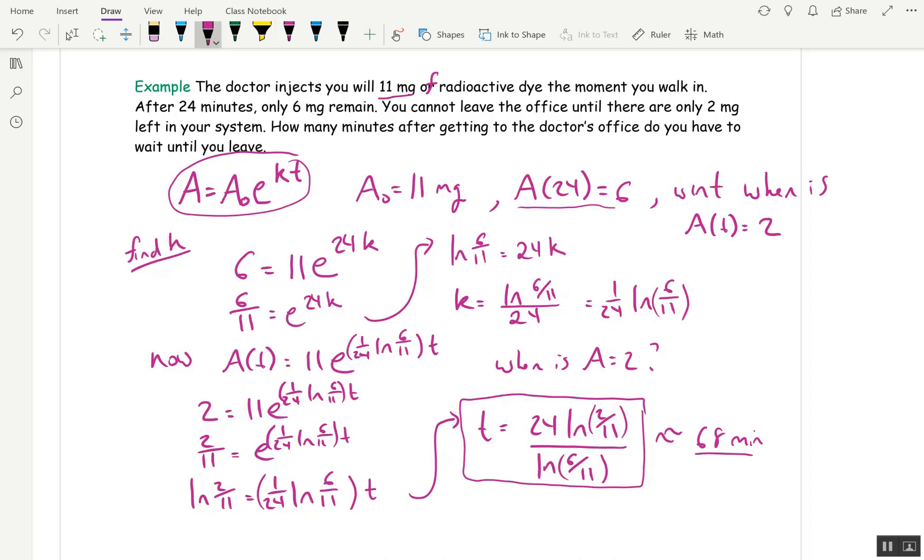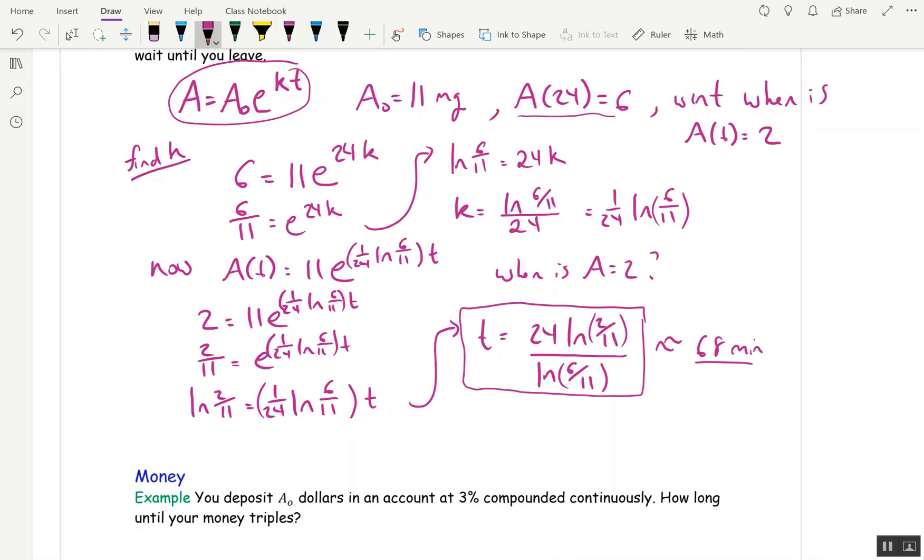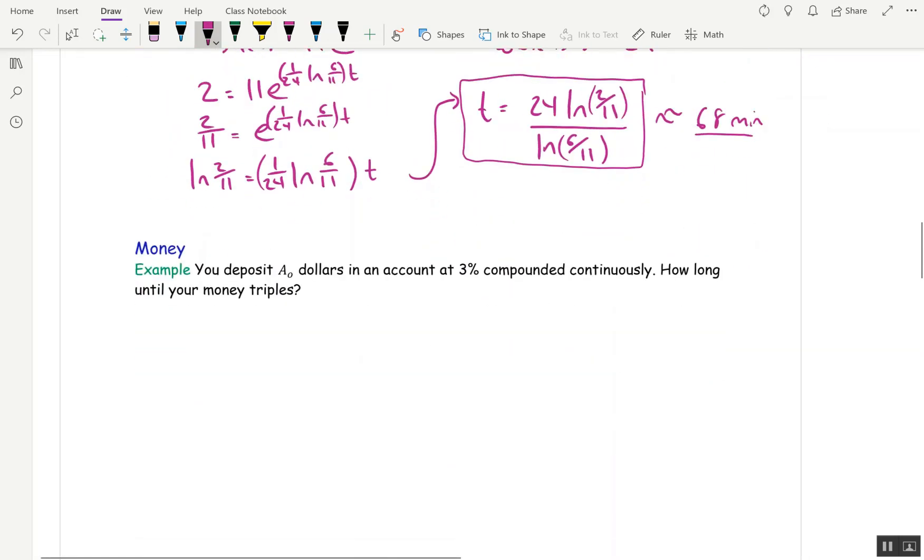You should make sure that whatever technology you're using, when you plug this in, you're getting around 68 minutes. Because if not, you're not using enough parentheses, or you're making some sort of entry mistake. It's super easy on Desmos because it's hard to make a mistake because it tells you exactly what you're doing. Okay. Let's move on to money.